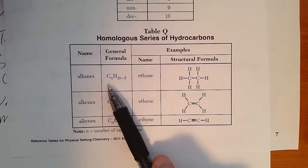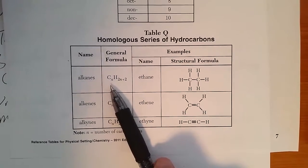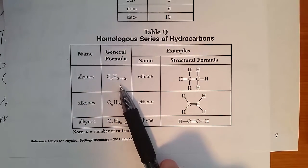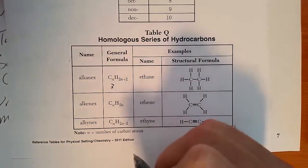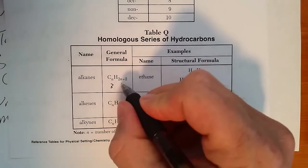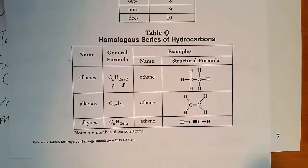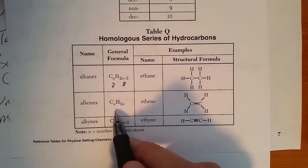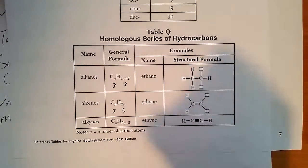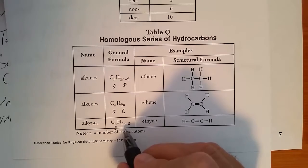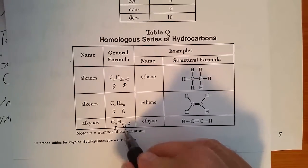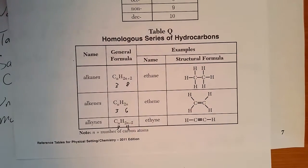For alkanes, for however many carbons, there's N carbons, there will be 2N plus 2 hydrogens. So if there's 3 carbons, there will be 3 times 2 is 6, plus 2, 8 hydrogens. Alkenes, if there's 3 carbons, there will be 6 hydrogens. Alkynes, if there's 3 carbons, there will be 6 minus 2 or 4 hydrogens.